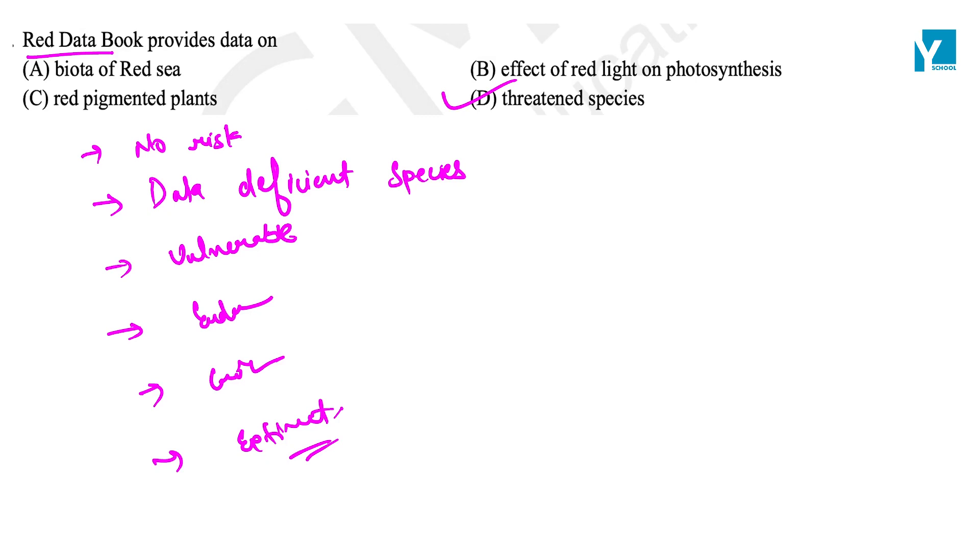Nothing about photosynthesis, nothing about red pigment or red sea. Red Data Book is only for threatened species. So the correct answer is D.